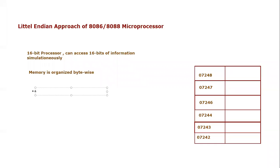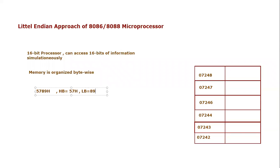Since we are talking about a 16-bit processor, let's say I want to store the value 5789h. In this 16-bit value there are two bytes: the higher byte and the lower byte. The higher byte is 57h and the lower byte is 89h. From the lower byte and higher byte we will be understanding the Little Endian concept.